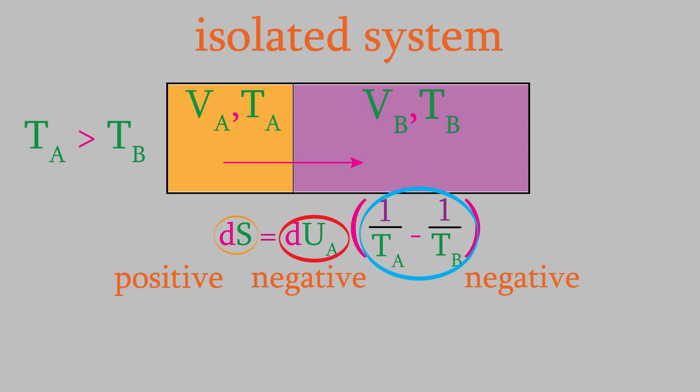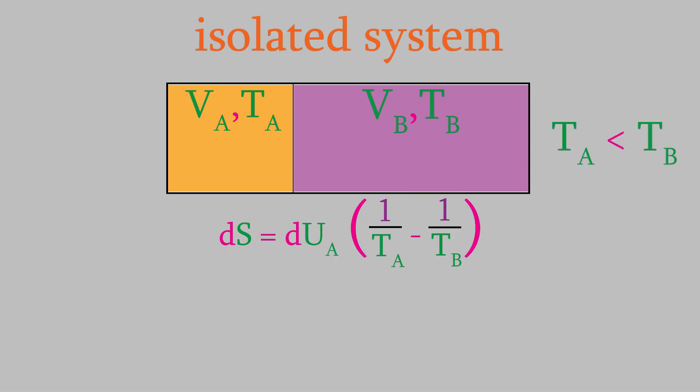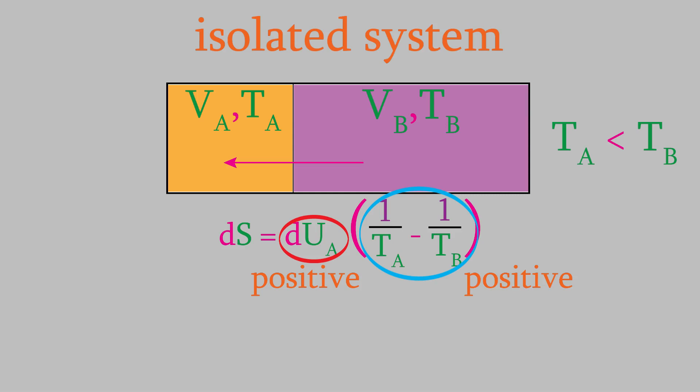Now let's suppose the right chamber is hotter, so Tb is the higher temperature. That means energy will flow out of that chamber and into the left-hand chamber. This time, dUa will be a positive number. In addition, since Tb is greater than Ta, the term in parentheses will also be positive. Since both terms on the right side are positive, the entropy change will also be a positive number. So when the right side of the container is hotter, the entropy of the system increases overall.